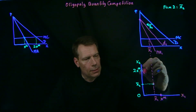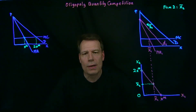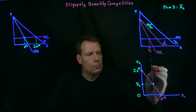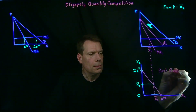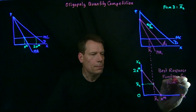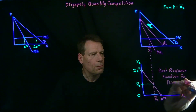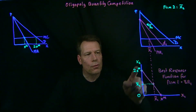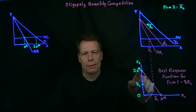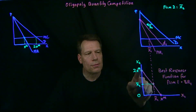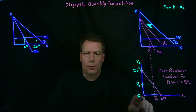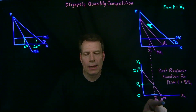Now we can connect all of these points, and it turns out they lie on a straight line. They lie on a straight line because we've assumed everything is linear in these industries, and that results in a straight-line best response function for firm one. What that tells us is: for any quantity x2, what firm one's best response will be. If firm two produces a lot, firm one's best response is to produce nothing. As firm two produces less, firm one's best response is to produce more — until we get to the point where firm two is producing nothing, in which case firm one's best response is to behave as a monopoly.